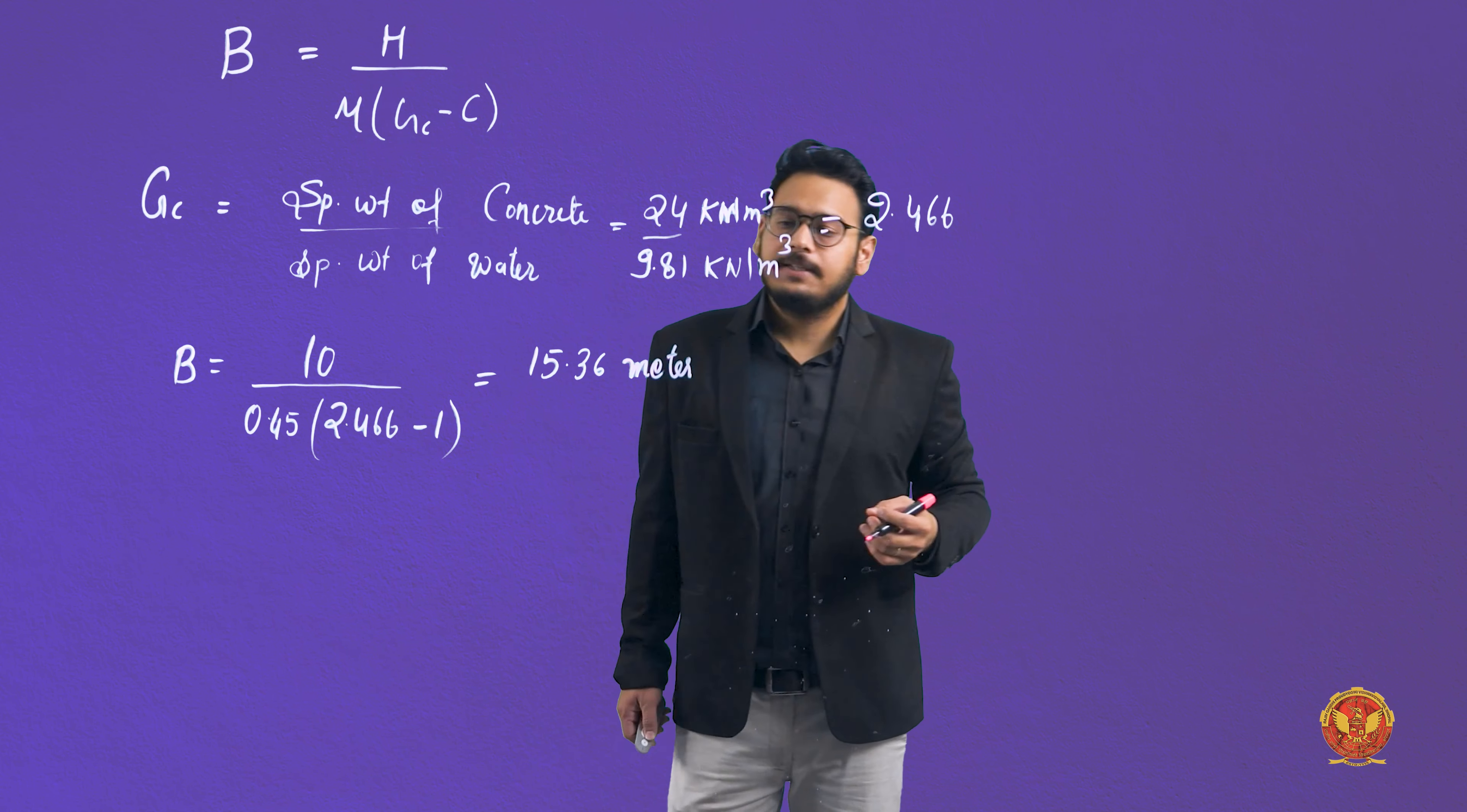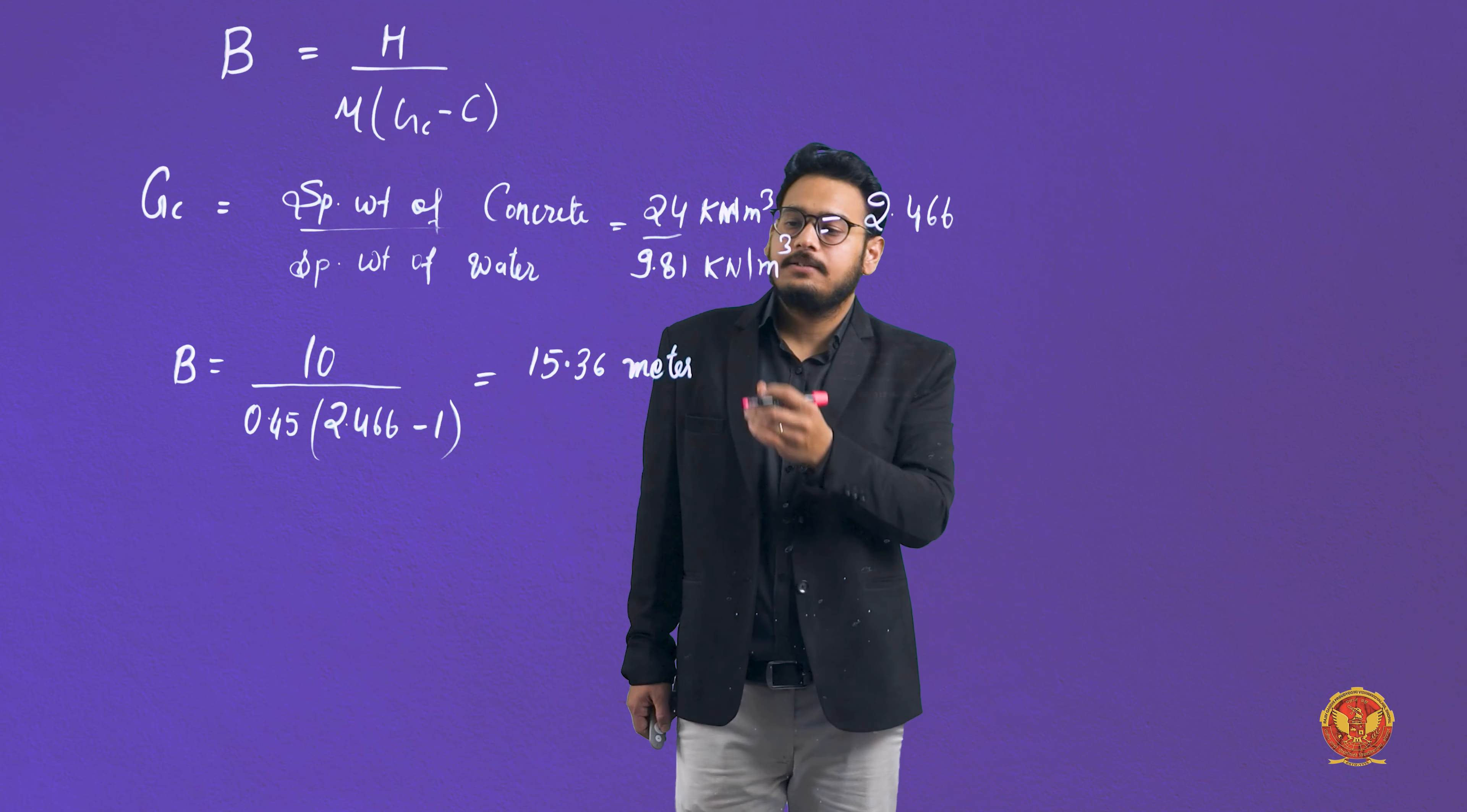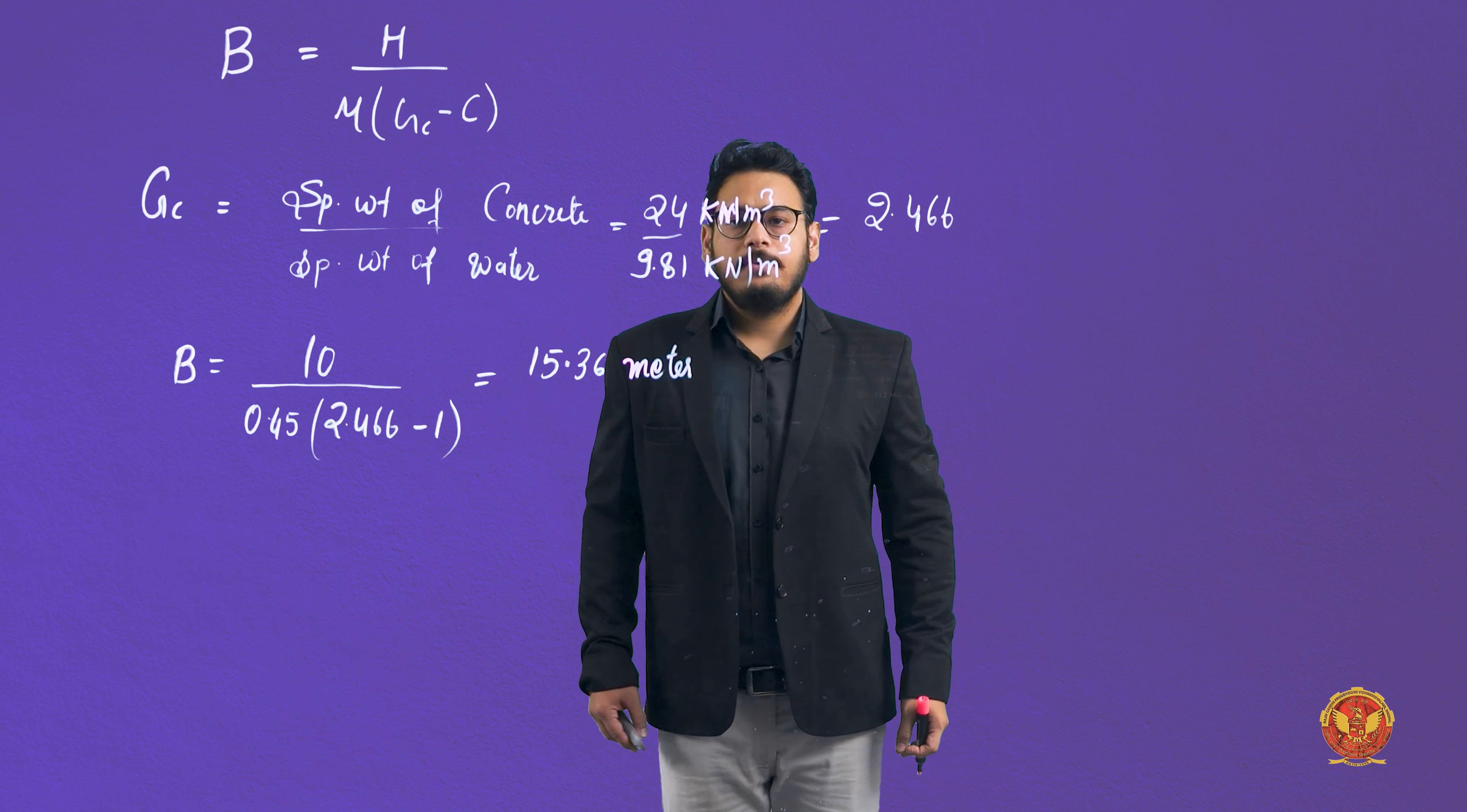That is 15.36. If we round off, we can make it 16, but here the exact value is asked, rounded to 2 decimal places. That's why 15.36 meters is our base width. I hope you understand the question very well. Thank you very much.